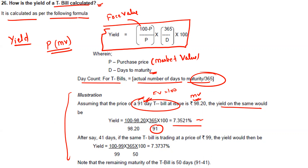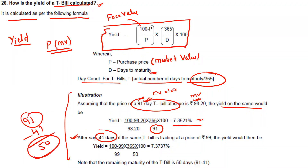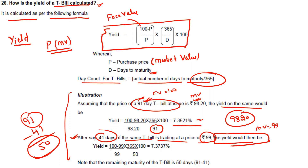For example, the price of a 91-day treasury bill issued at 98.20, face value 100: yield equals (100 minus 98.20) divided by 98.20, multiplied by 365 divided by 91, multiplied by 100. This comes out to be 7.3521 percent. After 41 days, if the same treasury bill is trading at 99, remaining days to maturity are 50, so yield equals (100 minus 99) divided by 99, multiplied by 365 divided by 50, multiplied by 100, giving 7.3737 percent.